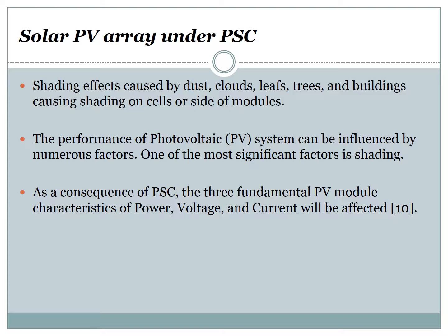The performance of a photovoltaic system can be influenced by numerous factors, and one of the most significant is shading. Generally, shading refers to a shadow on the photovoltaic modules' outer surface that will decrease the system energy yield. As a consequence, the three fundamental photovoltaic module characteristics — power, voltage, and current — will be affected. With the changing of irradiation during the day, the array output varies widely. However, unexpected shading effects caused by dust, clouds, leaves, trees, and buildings can cast shadows on cells or entire modules.